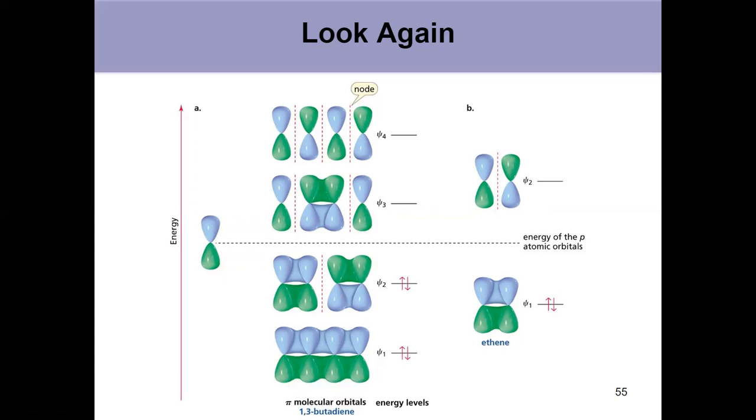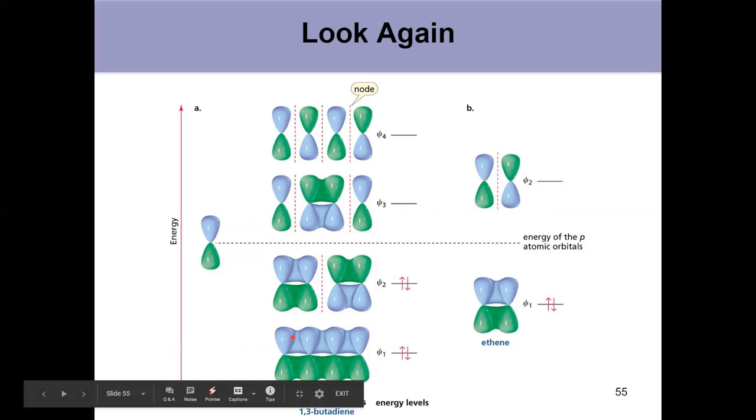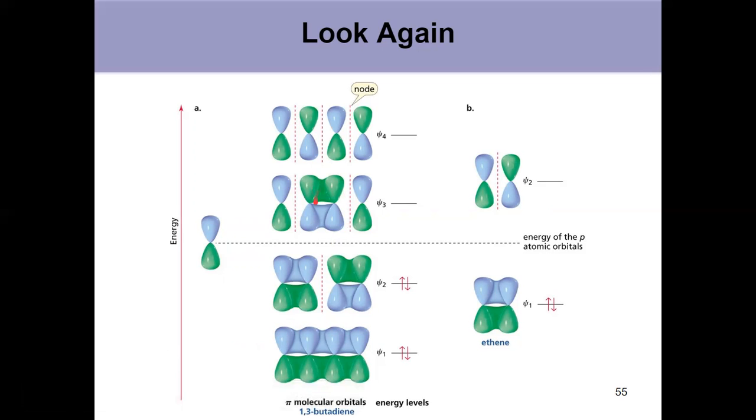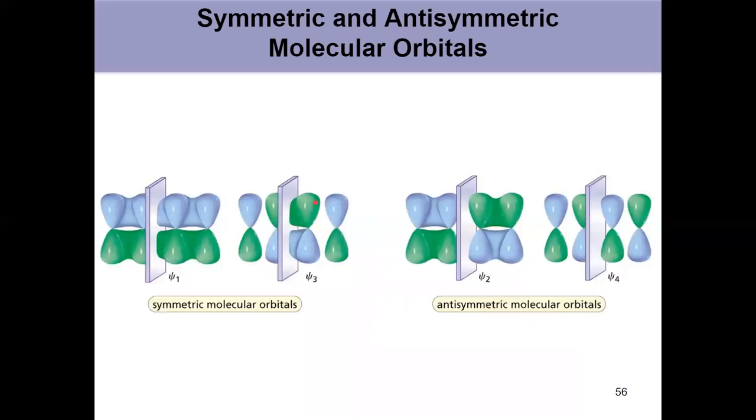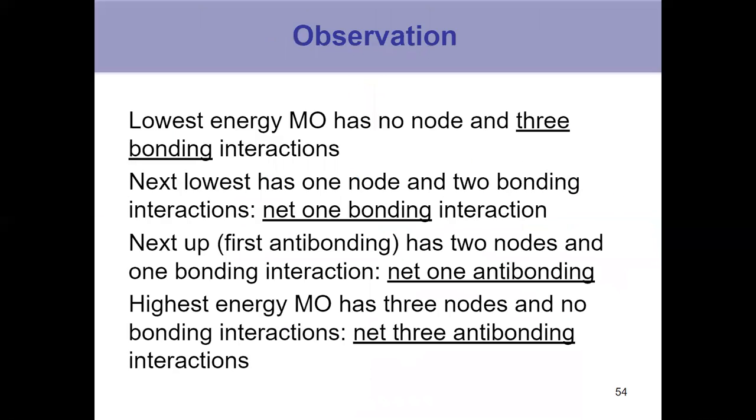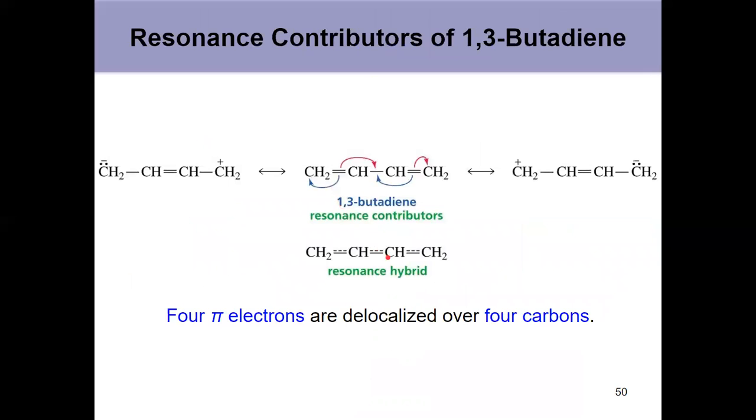And we can relate this to our molecule. Where is the greatest degree of bonding interactions? It's between C1 and C2 and C3 and C4, because they've got bonding interactions here and here, bonding interactions here and here. But there's also a degree of bonding between C2 and C3.